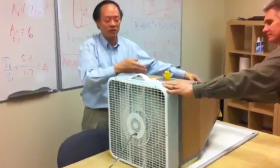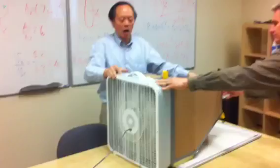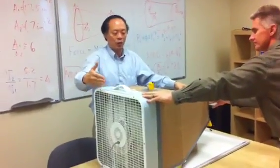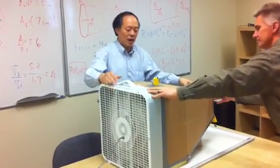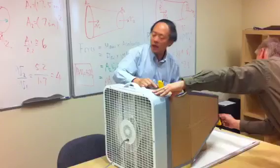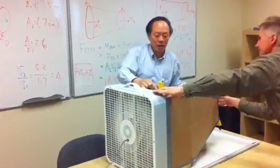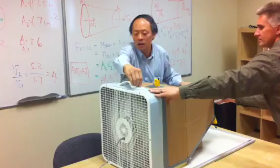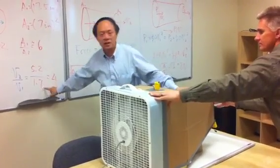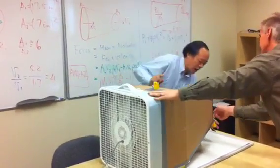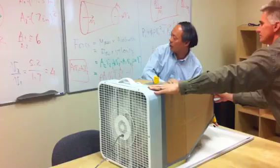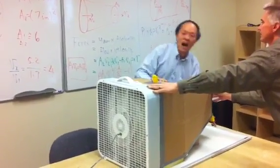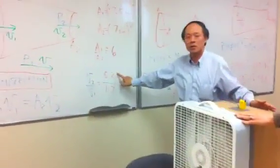What we have here is this wind funnel for which we are generating a wind flow through the use of a fan. The input velocity is about 1.7 meter per second. At the output here we measure an output velocity of 5.2 meter per second.